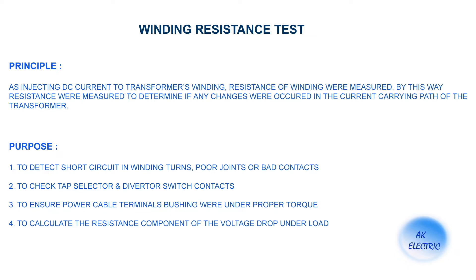Purpose: to detect short circuit in winding turns, poor joints or bad contacts, to check tap selector and diverter switch contacts, to ensure power cable thermal bushing is under proper torque, and to calculate the resistance component of the voltage drop under load.